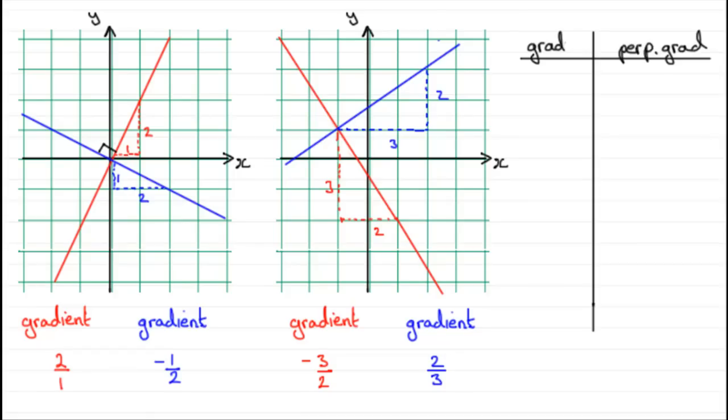So in other words, if I had a gradient of a line which was five, what would be the perpendicular gradient? Well, we can think of this as five over one. So we switch the fraction upside down and get one fifth. But remember to switch the sign, so we get minus a fifth.